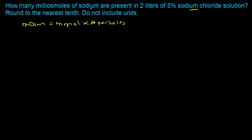Sodium chloride dissociates into a sodium cation and a chloride anion, so one millimole of sodium chloride gives one millimole of sodium — a 1:1 ratio. The molecular weight of sodium chloride is approximately 58.44, which we'll need shortly.